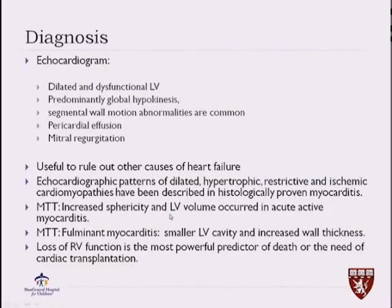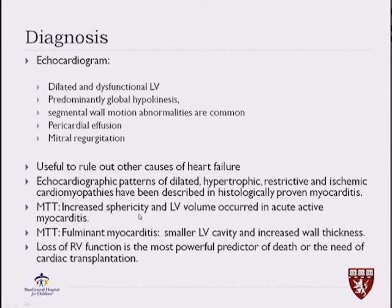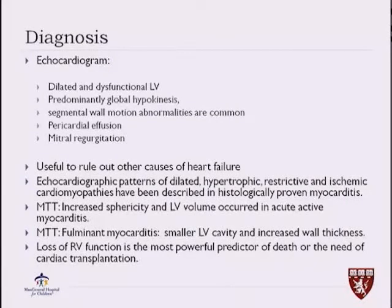In the large multicenter myocarditis treatment trial mentioned earlier, they noticed that in acute active myocarditis the LV is ballooned and the LV volume is large. For fulminant myocarditis, the LV is smaller in cavity and more thick. And if there is loss of right ventricular function, this is the most powerful predictor of death and the need for cardiac transplantation.